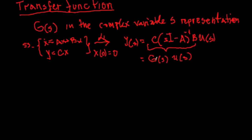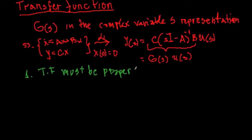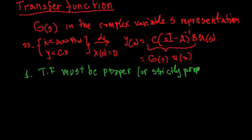The expression C(sI minus A) inverse B is g of s, or the transfer function. What are the main features of the transfer function? First, the transfer function must be proper, or strictly proper. And second, the transfer function is unique.